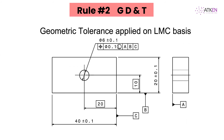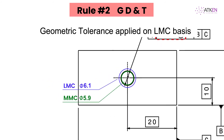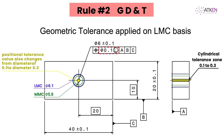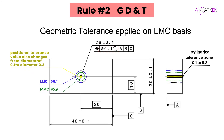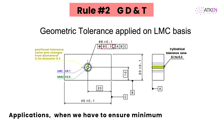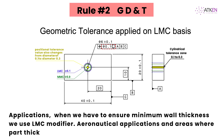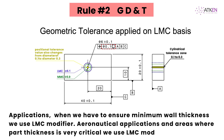In this example, we have the LMC modifier applied to positional tolerance. When the hole is manufactured at LMC of diameter 6.1, a positional tolerance of diameter 0.1 holds good. But when the hole departs from LMC of diameter 6.1 to MMC of diameter 5.9, the positional tolerance value changes from diameter 0.1 to diameter 0.3. In applications where we have to ensure minimum wall thickness, we use the LMC modifier — such as aeronautical applications and areas where part thickness is very critical.